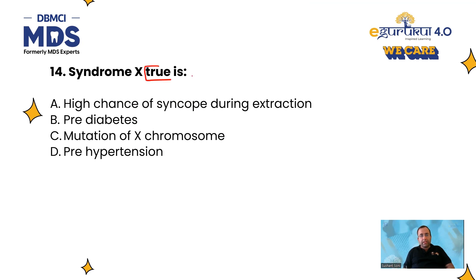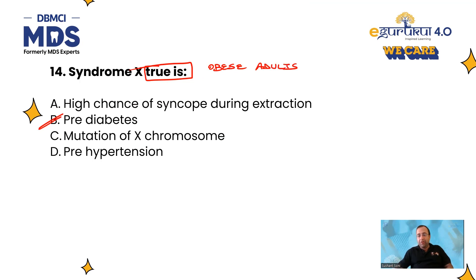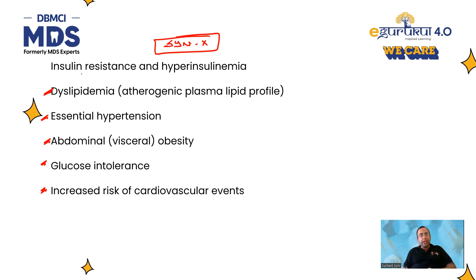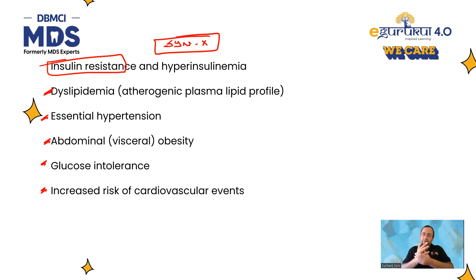Syndrome X — what is it? It has nothing to do with mutations in the X chromosome. It is prediabetes / metabolic syndrome, seen in obese adults. It is associated with insulin resistance, hyperinsulinemia, dyslipidemia (LDL and VLDL increased, HDL reduced), hypertension, obesity, glucose intolerance, and increased cardiovascular risk. All these points stem from insulin resistance leading to dyslipidemia and abdominal obesity.